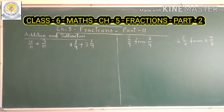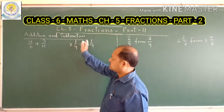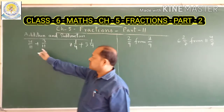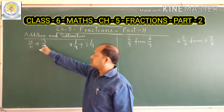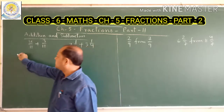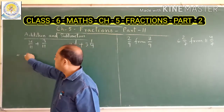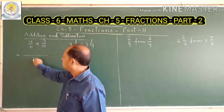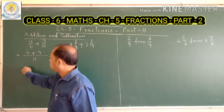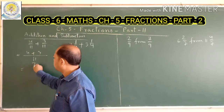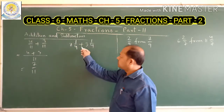Now we are going to solve addition and subtraction of fractions. The question says 4 upon 11 plus 3 upon 11. Here the denominators are same, so we keep 11 as the denominator and 4 plus 3 equals 7, giving 7 upon 11. It is very simple.